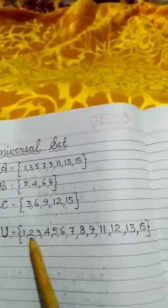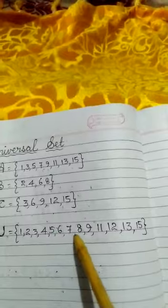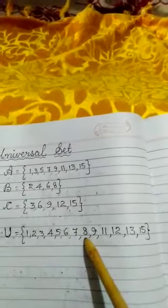...set 1, 2, 3, 4, 5, 6, 7, 8, 9, 11, 12, 13, 15. So these are the subsets here, and this universal set is the superset.